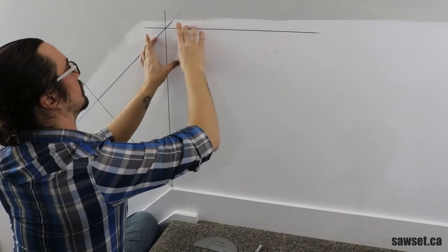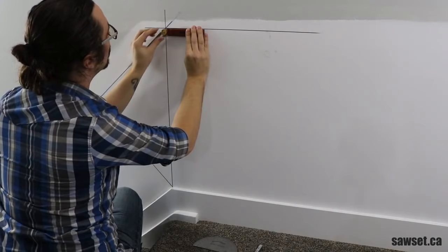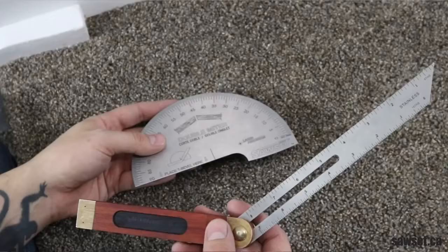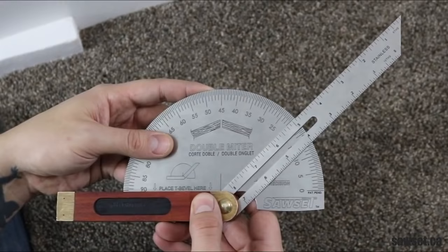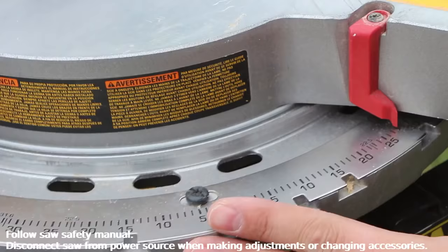Alright then, we're ready to install the chair rail. I've already taken the measurements, now I need to find the correct saw setting for this angle. First, we take a T-bevel and line it up to this angle. Then we transfer it onto our trusty sawset protractor. Being sure to use the double miter side to find our saw setting, which in this case is 21.5 degrees, then simply set our saw to exactly 21.5 degrees and cut.